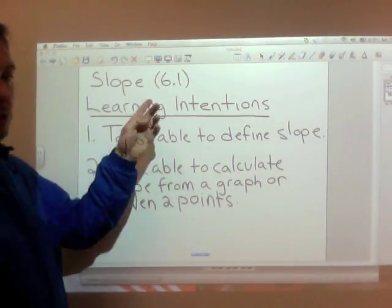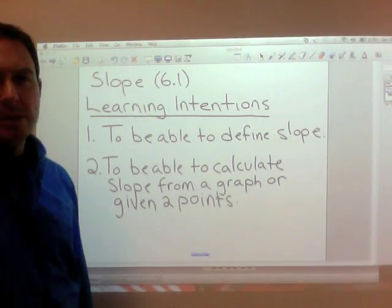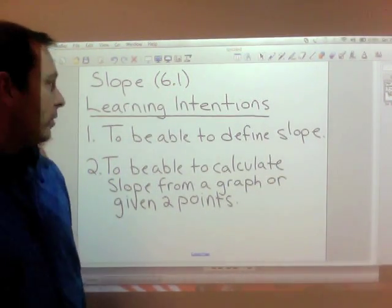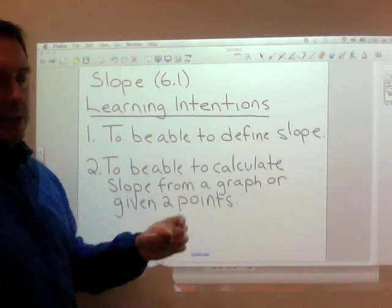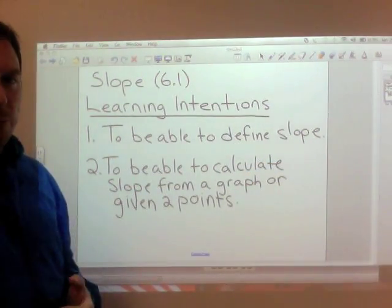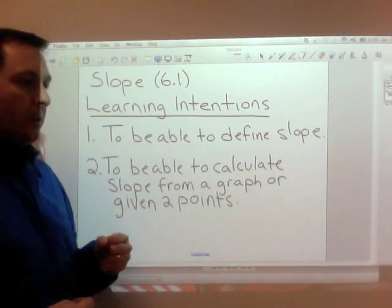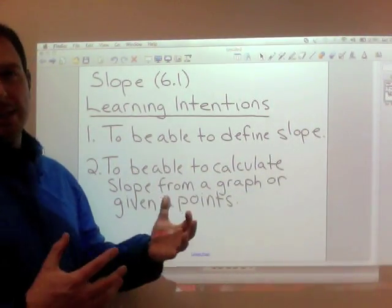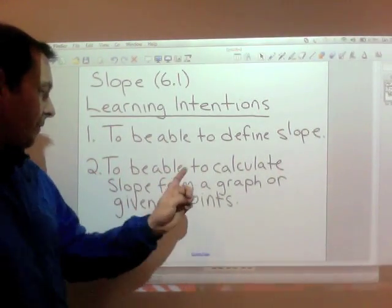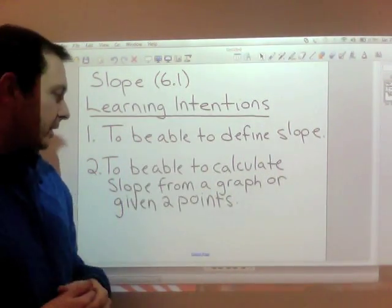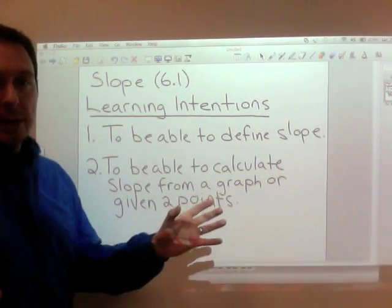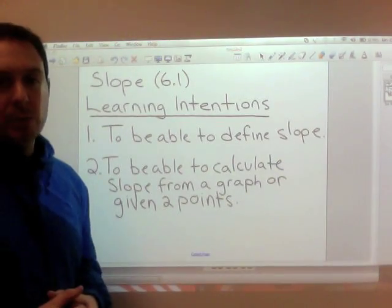Today's lesson is on slope, and it's the start of chapter 6, section 6.1. The textbook does a pretty good job of this section if you want to follow along. The learning intentions for today are: number one, to be able to define slope in a few different ways and recognize when slope is being asked for; and number two, to be able to calculate slope from a graph or from two given coordinates on an xy grid.